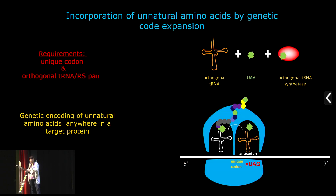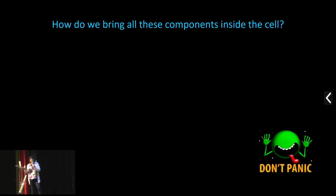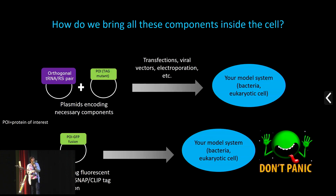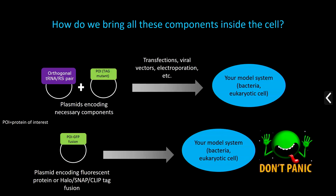This is a bit more complex than making a fluorescent protein fusion because you need to bring all these components inside the cell — but this is done using plasmids encoding these tRNA and synthetase pairs, along with your protein of interest with the site-specific mutation. Depending on your model system, you can use transfections, viral vectors, or electroporation. It's very similar to making fluorescent protein fusions or HaloTag constructs — you also need to bring those inside your model system.